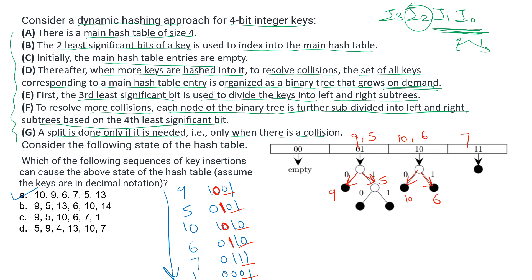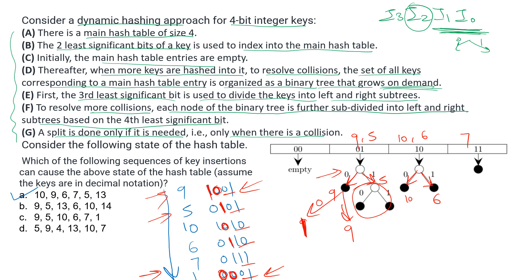Finally, 1 is inserted with last two bits 01, colliding with 9 and 5. We check i2, which is 0 for 1, and 9 also has i2 = 0, causing another collision. The tree must grow further from the zero side. Checking i3: for 1 it is 0, and for 9 it is 1. So zero side represents 1 and one side represents 9. This produces a different tree structure than the target diagram. Similarly, options B and D also fail, confirming that only option A gives the correct hash table structure.